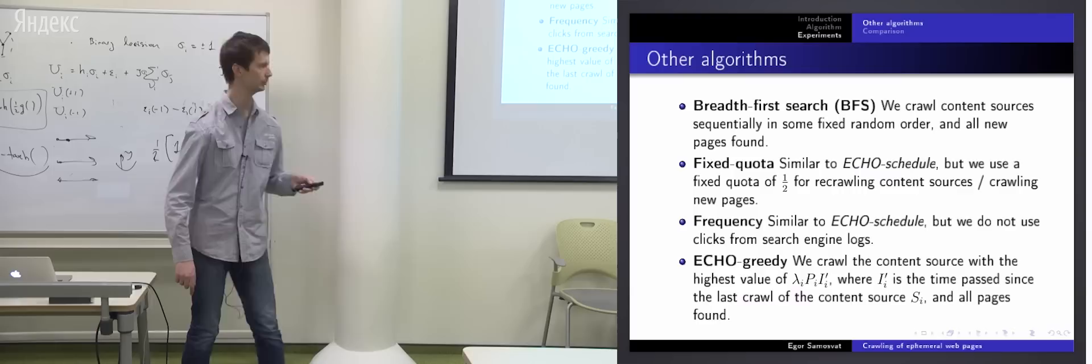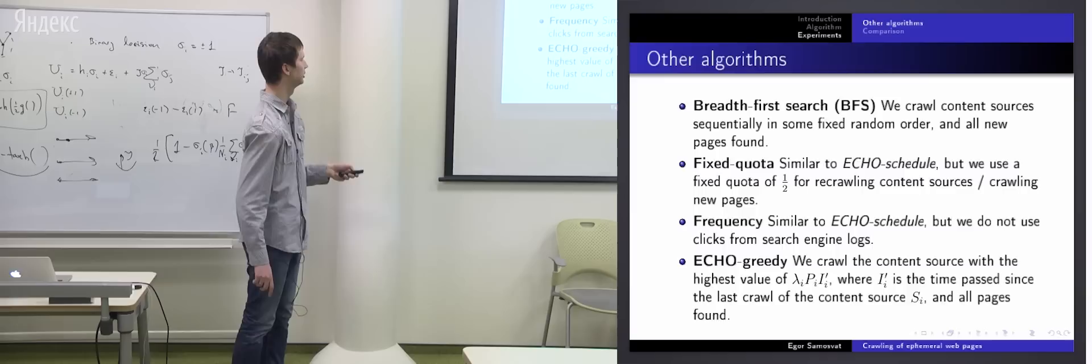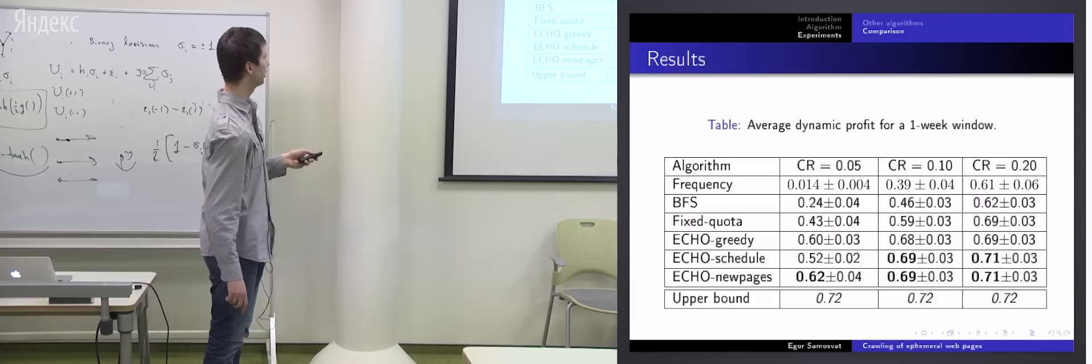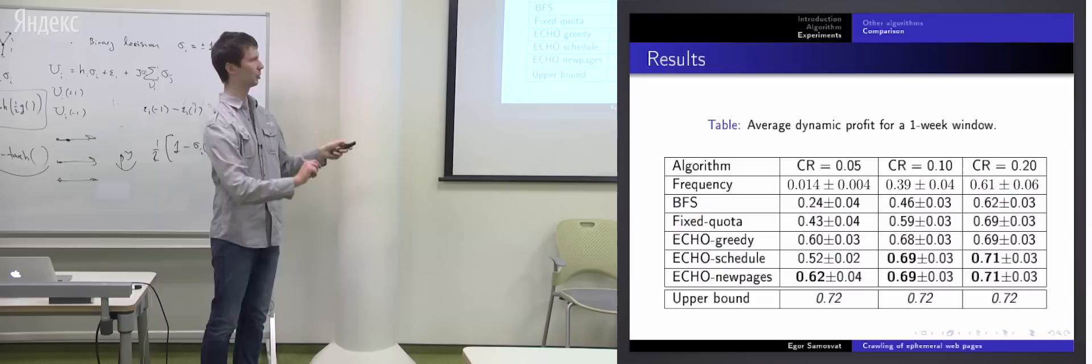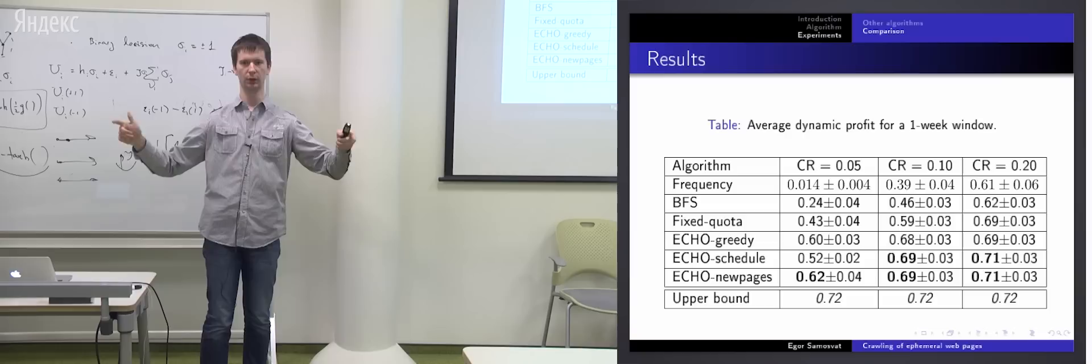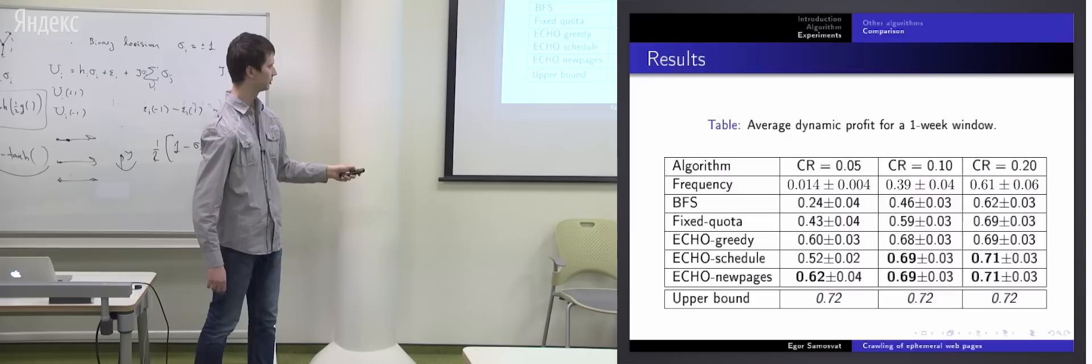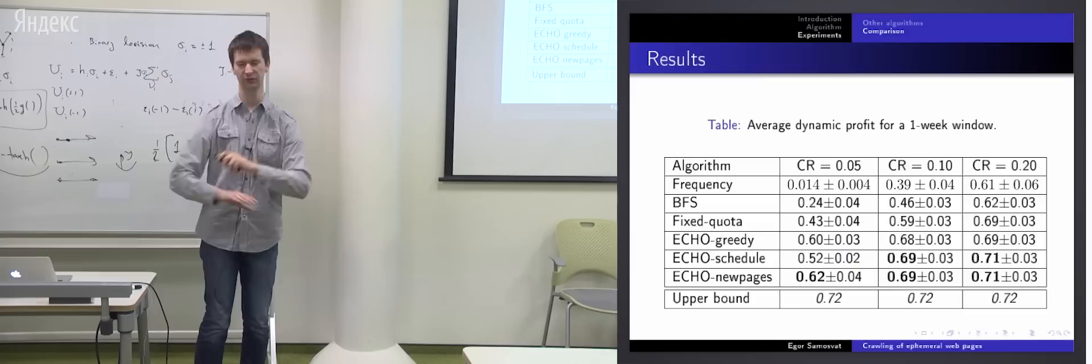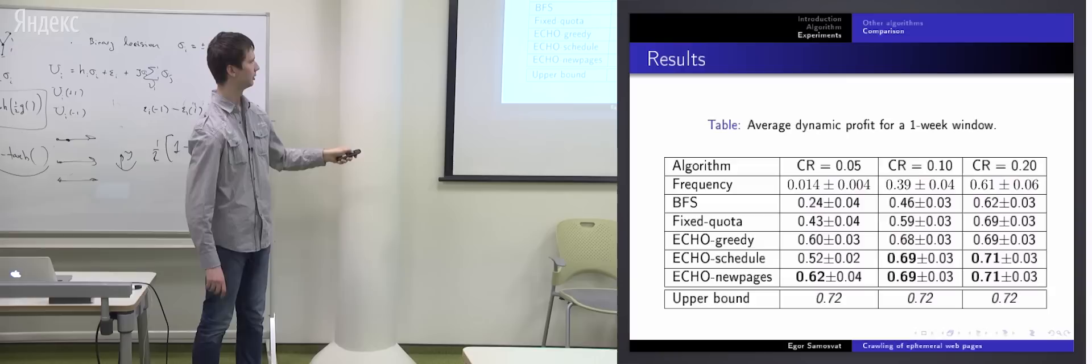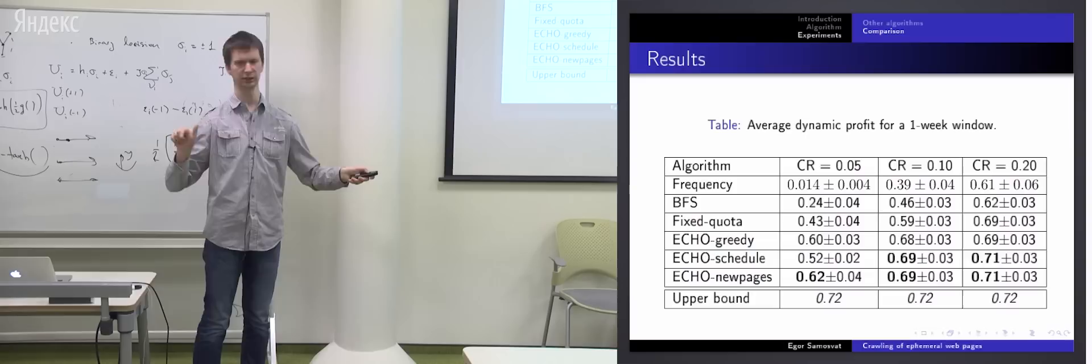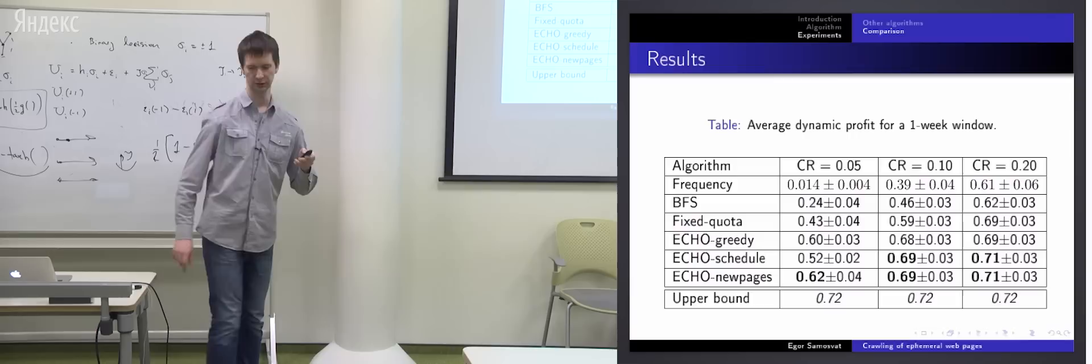Okay. Now I want to show you experimental results on the real data which we gathered. Okay. So the method echo new pages is the best. This is average dynamic profit for a sufficiently large time window, when we can neglect temporal effects. So it's like overall quality. Echo new pages is the best one. Upper bound is the method when we crawl each page just when it's appeared. It's like when we have infinite resources. Here we try different crawl rates. The bigger crawl rate, the lower is gap in quality between different methods. And echo greedy is also not so bad. And this is good because echo greedy is much easier to implement in practice.